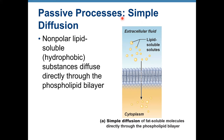We're going to look first at simple diffusion. Nonpolar, lipid-soluble, or hydrophobic substances — hydrophobic means they repel water — diffuse directly through the phospholipid bilayer. You can see the diagram representing simple diffusion: substances that are lipid soluble move through and no ATP is used. They also move from high concentration to low concentration, which is called moving down their concentration gradient.